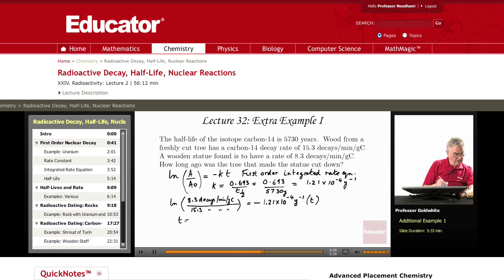T, therefore, equals the logarithm of 8.3 divided by 15.3 divided by 1.21 times 10 to the negative 4 years to the negative 1.